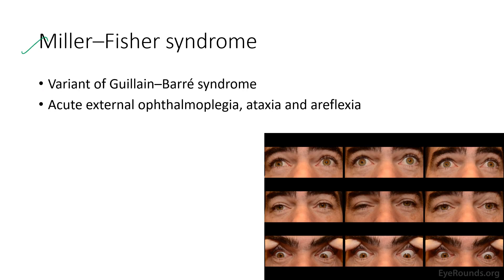Next is Miller Fisher syndrome. It is a variant of Guillain-Barré syndrome. It is characterized by acute external ophthalmoplegia, ataxia, and areflexia, as shown in this clinical picture.